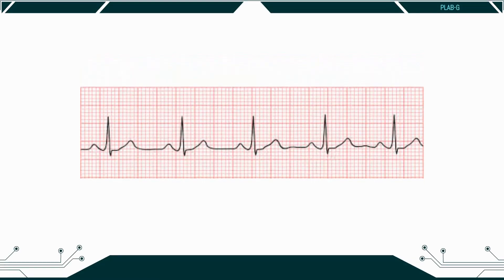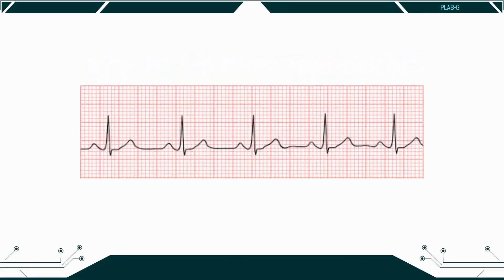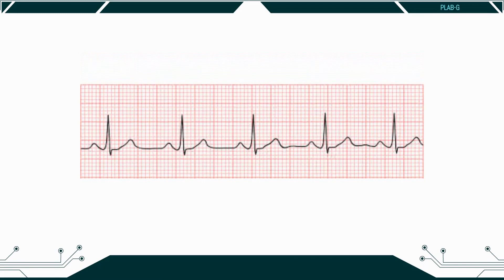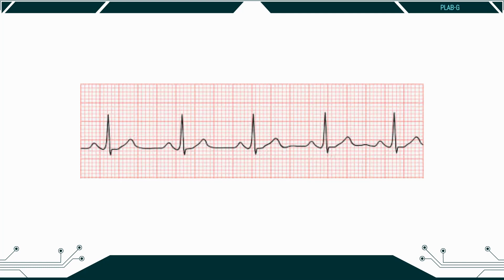Rate can be calculated in a number of ways. You can count the number of QRS complexes in one line of ECG, that is 10 seconds, usually of lead 2 the rhythm strip. You can also count the number of large squares between two R waves and divide 300 by this number. If the patient is in atrial fibrillation, it is more accurate to report a rate range rather than a single value.